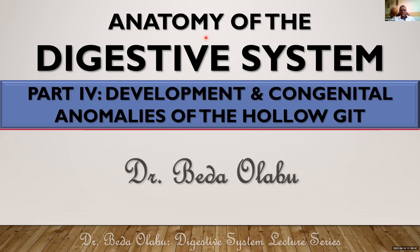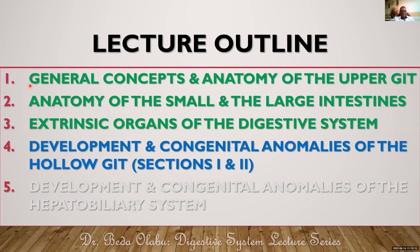Welcome once again to our online class on the digestive system. Today we are going to look at development and congenital malformations of the holo-GIT. We are now in part four of our lecture series on the anatomy of the digestive system. We've already looked at the first three, and I've chosen to divide part four into two sections, both focusing on development and congenital anomalies of the holo-GIT.